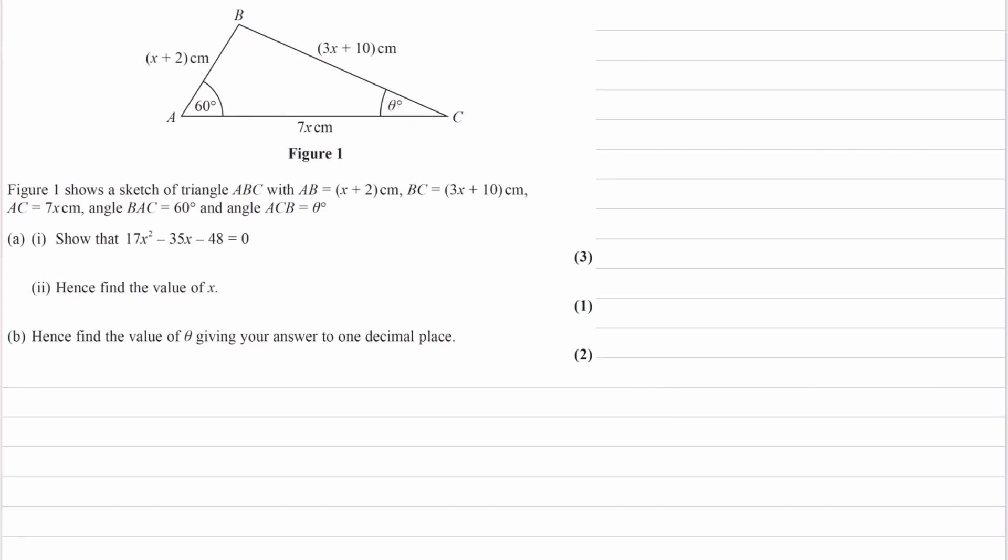We have a triangle ABC. We're given all of the sides in terms of x, and then we're told two angles. Angle A is 60, and angle C is theta. And then we're trying to show that this quadratic equation is true.